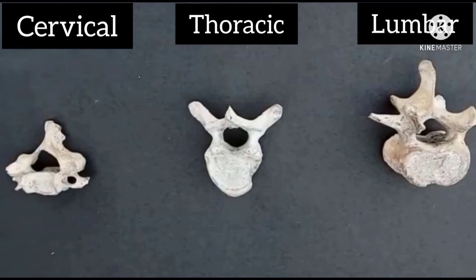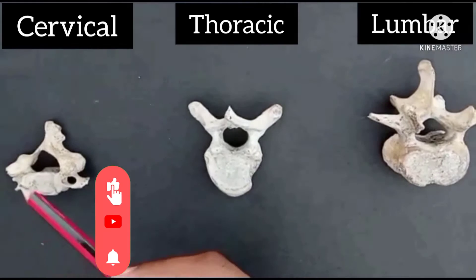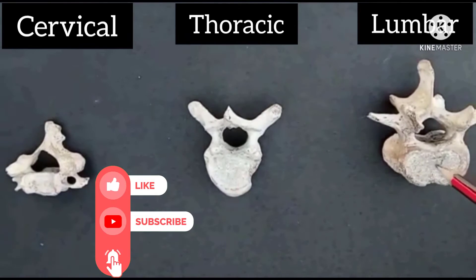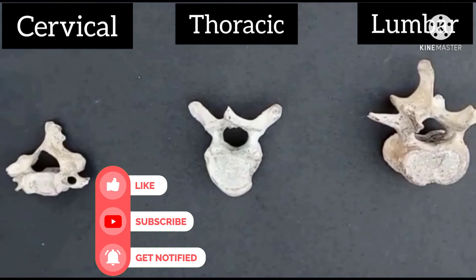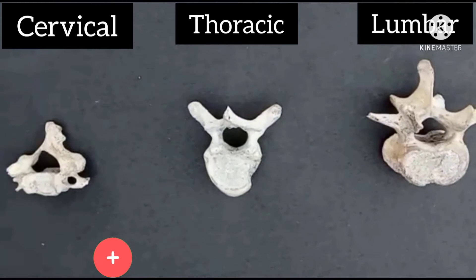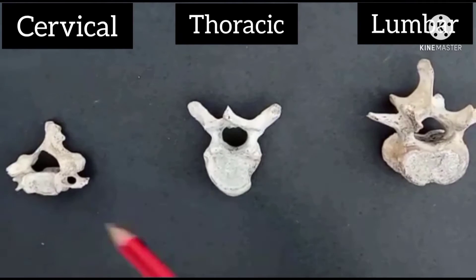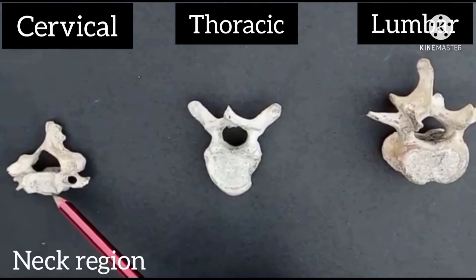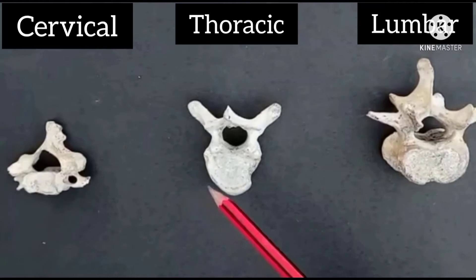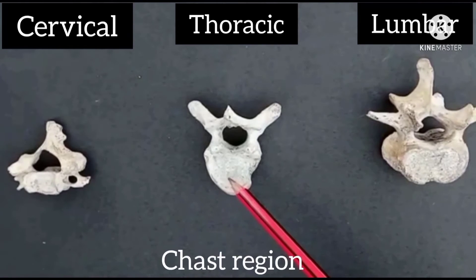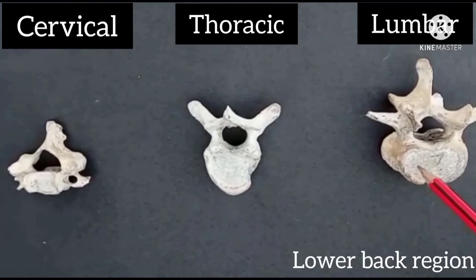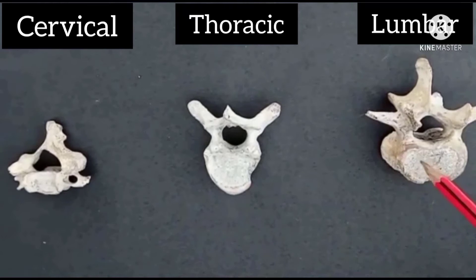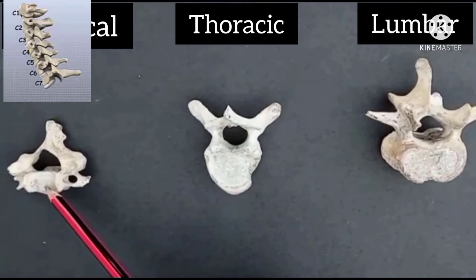Hello everyone. In this video we will discuss the comparison of cervical, thoracic, and lumbar vertebrae. Introduction: the key differences between cervical, thoracic, and lumbar vertebrae. There is location — cervical vertebrae are in the neck region, thoracic vertebrae are in the thoracic chest region, and lumbar vertebrae are in the lower back region.